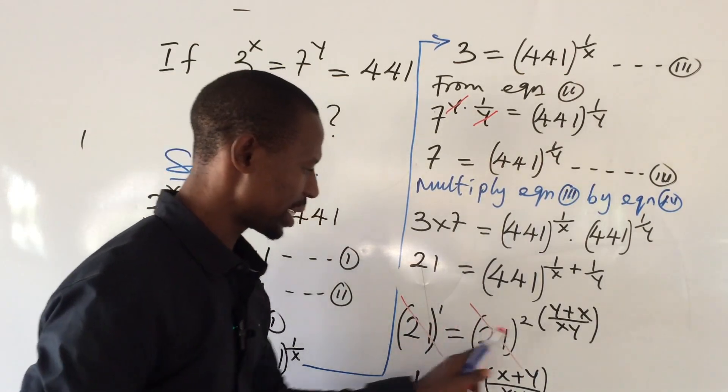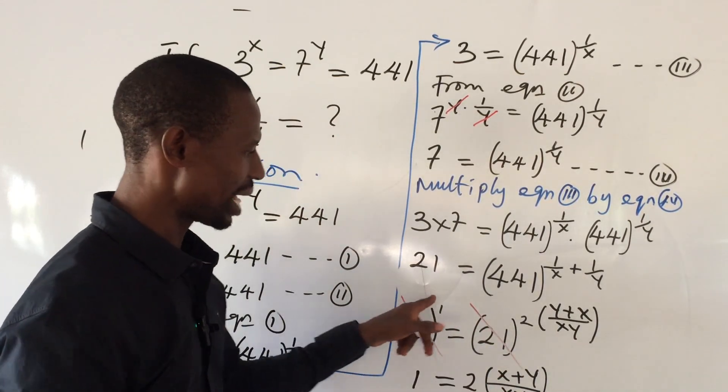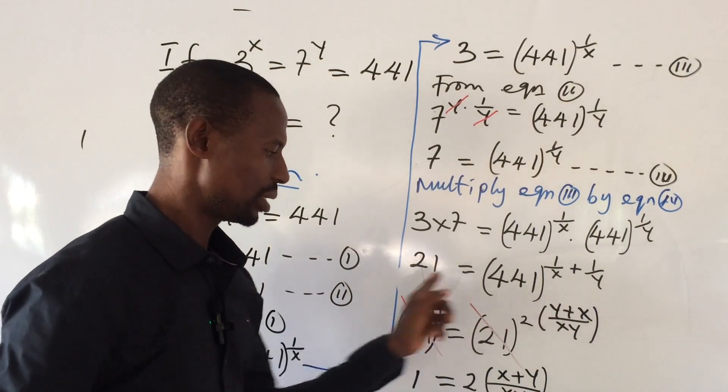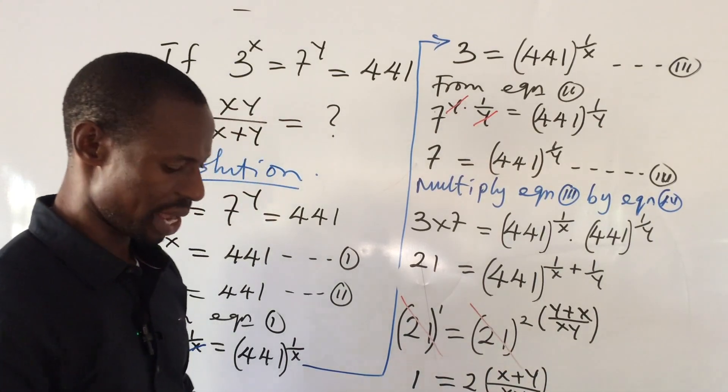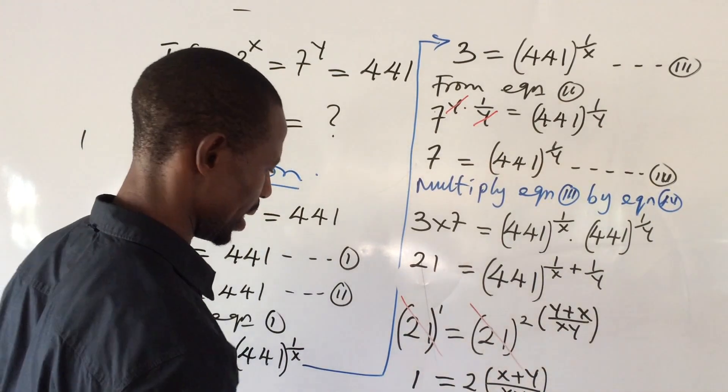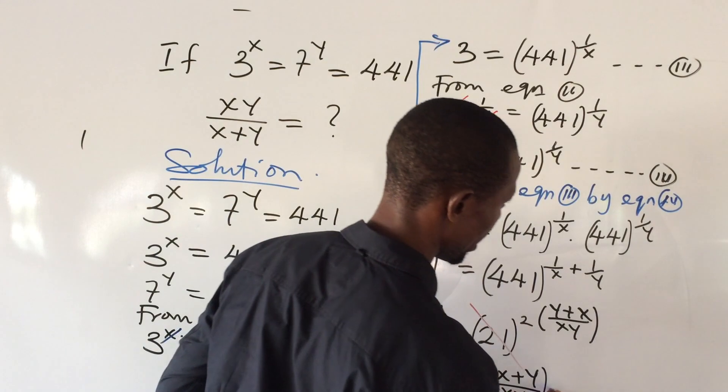Because when the bases take care of themselves, then we can equate the power. So this is the power to this. This is the power to this. So when we equate the power, this will give us this. So let's proceed from here again.